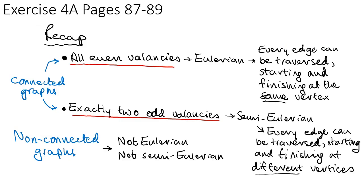So you should now be able to do exercise 4A on pages 87 to 89. So just to recap of what even valencies are, what odd valencies are, Eulerian and semi-Eulerian graphs. These are always connected graphs. And then if a graph is not connected, then it's not Eulerian and it's not semi-Eulerian. Thank you.